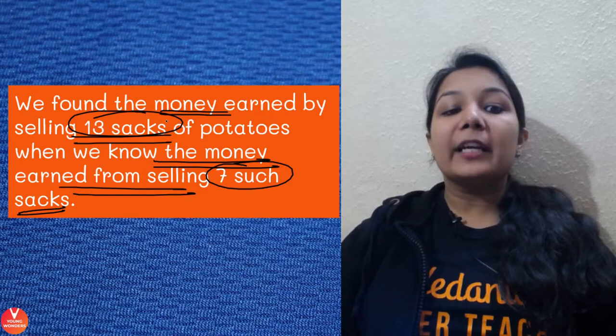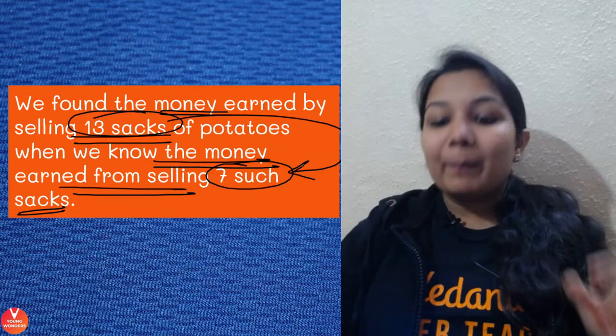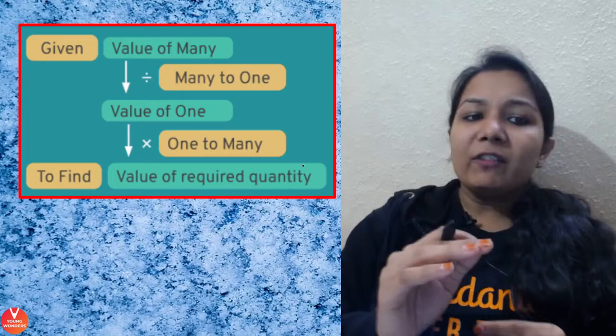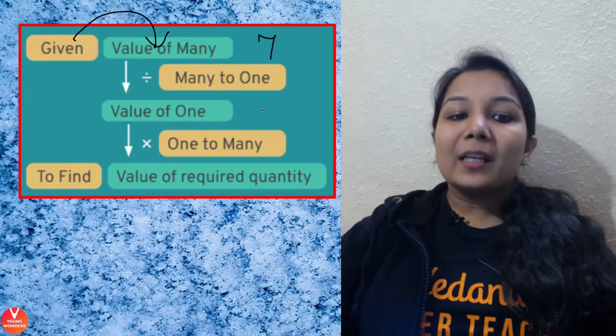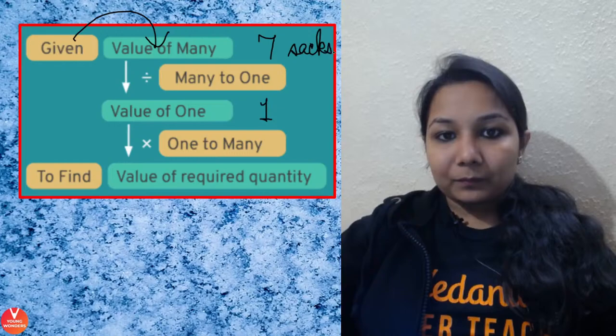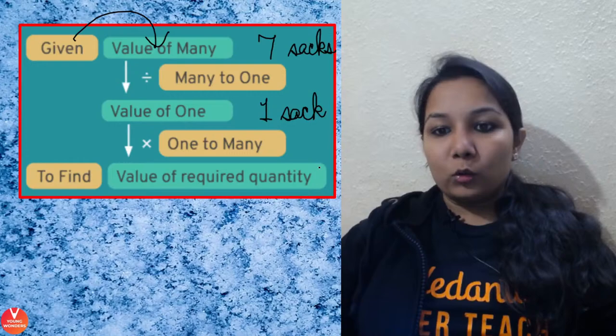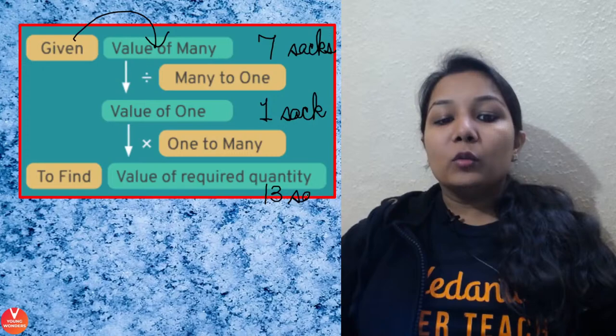So we found the money earned from 13 sacks when we knew the money from seven sacks. The basic structure is: given the value of many — seven sacks' cost was known — we found the value of one, and then we found the value of 13. From many to one we divide, and from one to many we multiply.